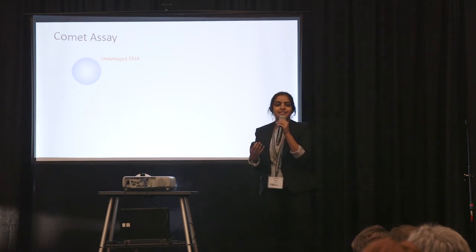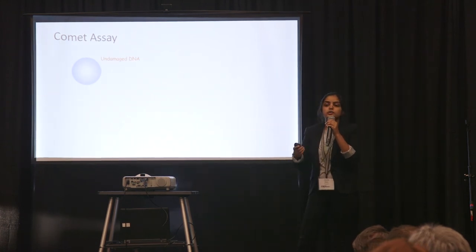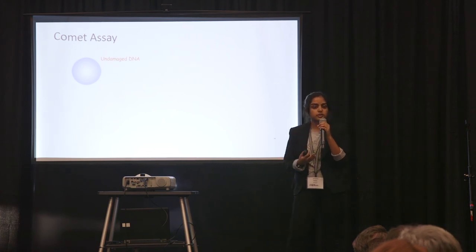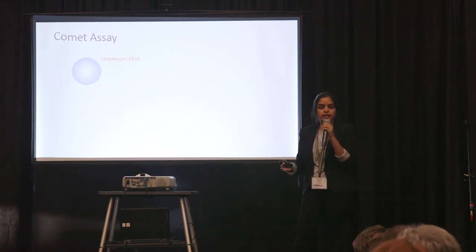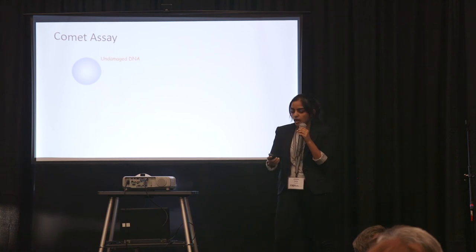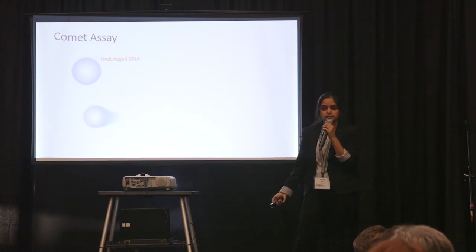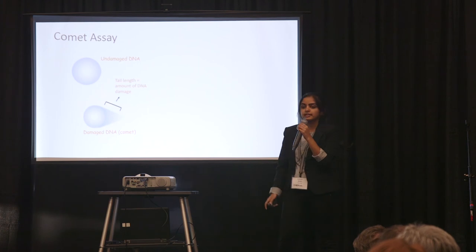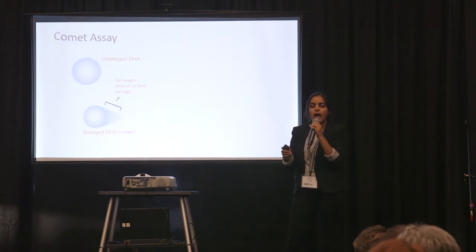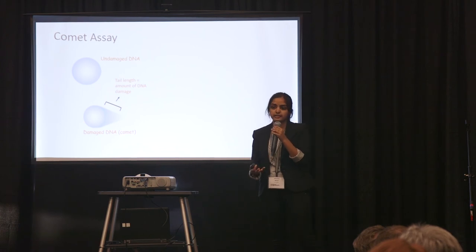However, when DNA is damaged, those pieces break and become fragmented. So when you run DNA, which is electrically charged, through an electrical field, it gets pulled to the positive end, creating a comet effect. So one can actually measure the exact length of this comet and have the exact quantitative number of the amount of DNA damage there is.